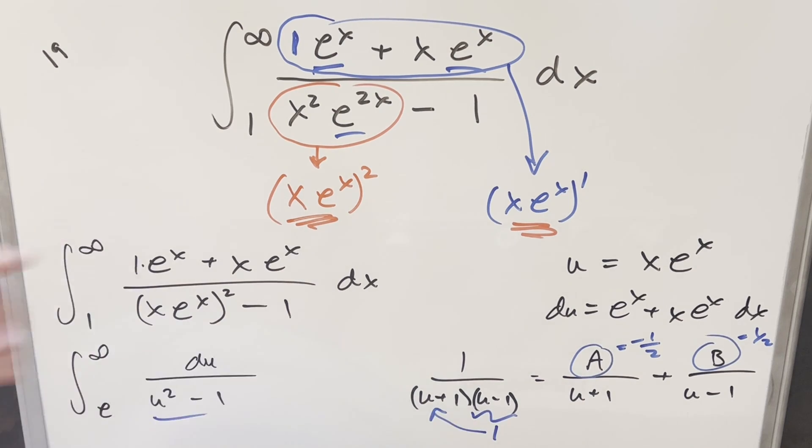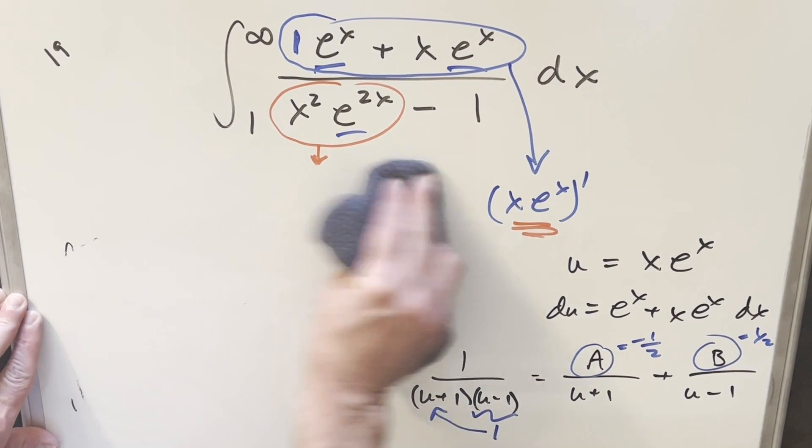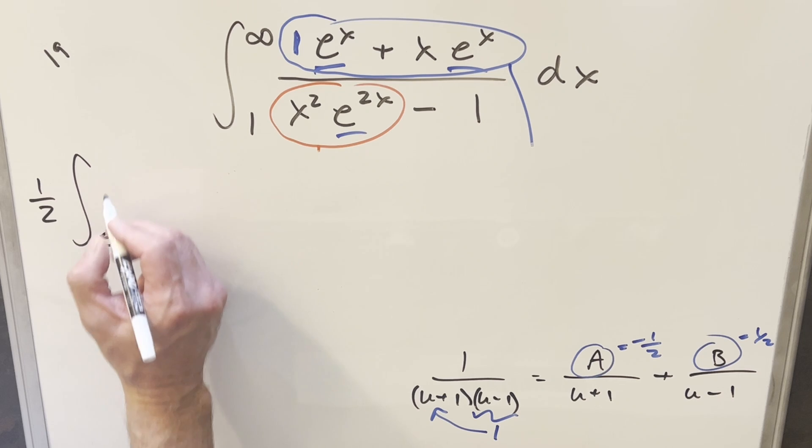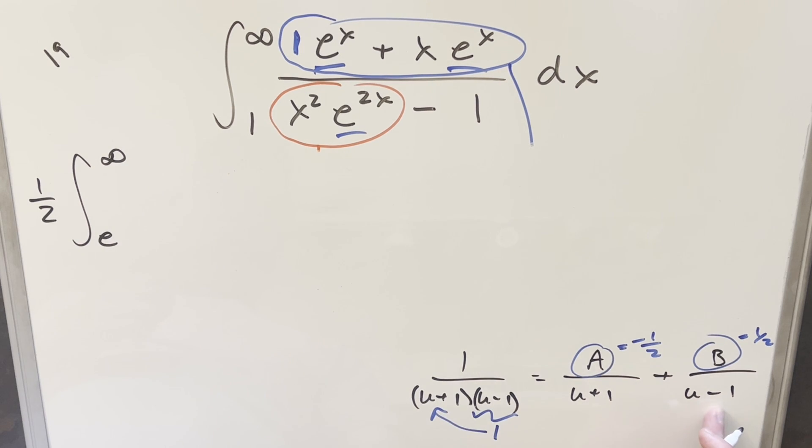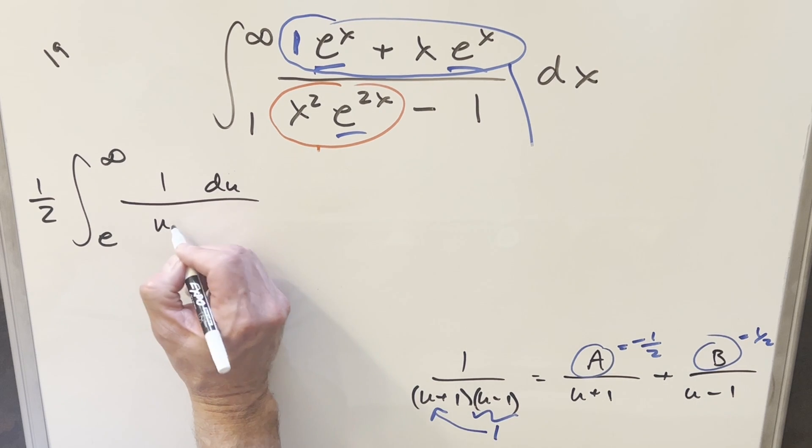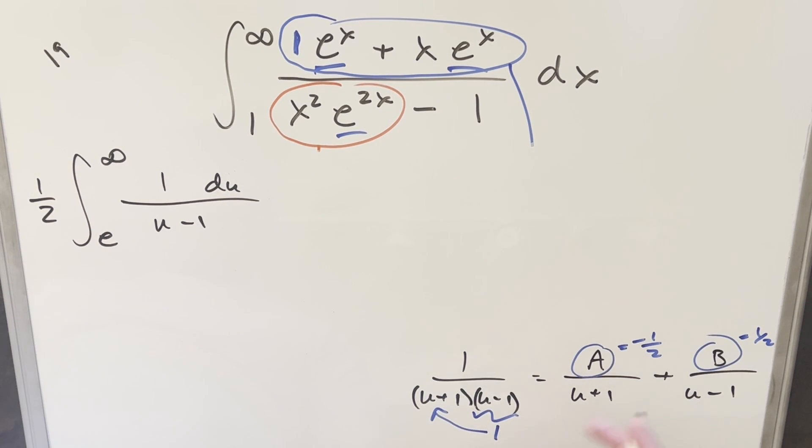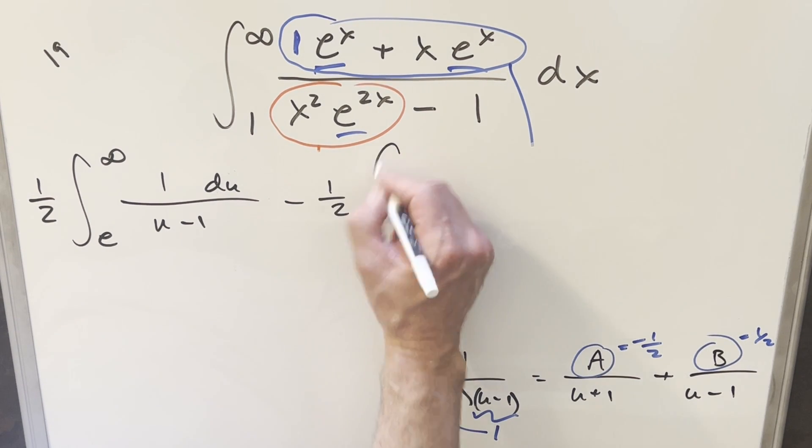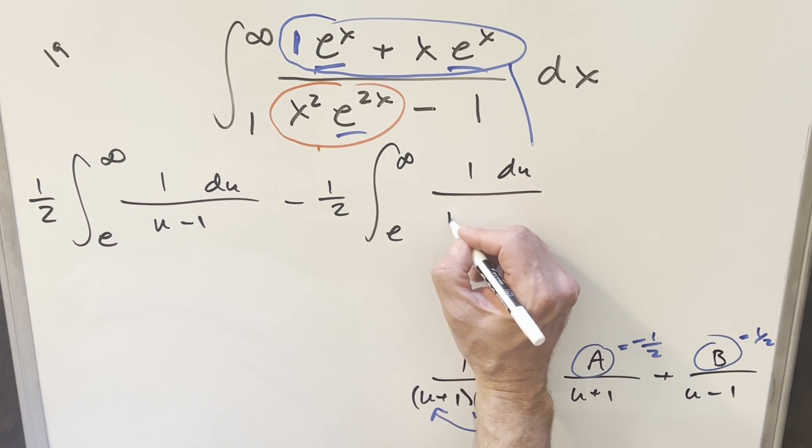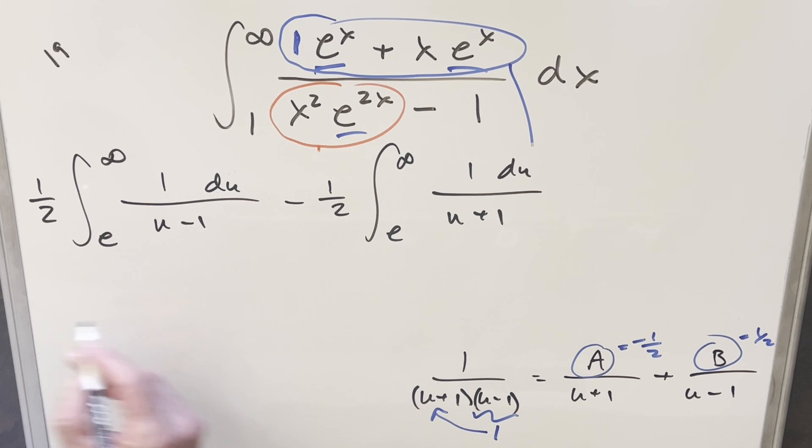So now from here, we can just take what we found here and put it back into the integral. So let's just make a little space. But what I want to do, actually, with the minus sign, let's just reorder this. And we have a half on both, so I can factor a half out front. So for the first integral, what's going to happen? This is going from e to infinity. We'll use this one. We factor the half out front. So now we just have 1 du in the numerator, and this is going to become u - 1. And then for the second one, I'll factor this minus 1/2 out front. We still have the same bounds. And this is just going to become 1 du over u + 1.